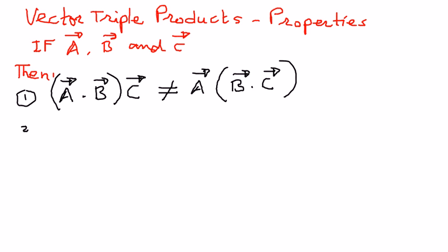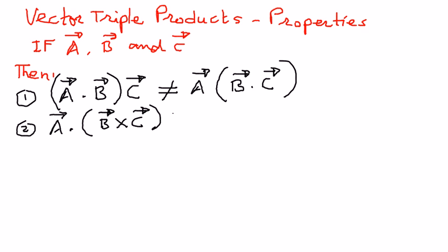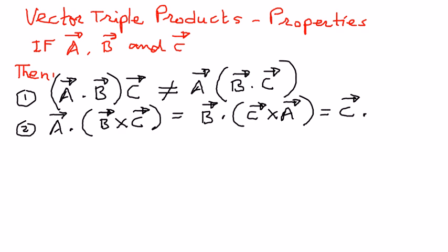The second property tells us that if we have vector A multiplied with the cross product B cross C, that is the same as saying vector B dot vector C cross vector A, and that is the same as saying vector C dot vector A cross vector B.